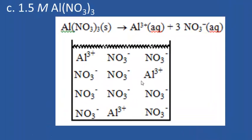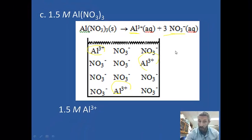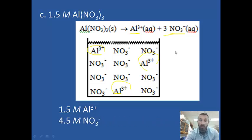Letter C: 1.5 molar aluminum nitrate. Aluminum nitrate dissolves in water to produce 1 aluminum ion and 3 nitrate ions. Your drawing should show that for every 1 aluminum — say 3 aluminums — there should be 3 times as many nitrates, so 9 nitrates. The concentration of aluminum ions is 1.5 molar, the same as the solution. The nitrate concentration is 3 times greater: 4.5 molar nitrate.